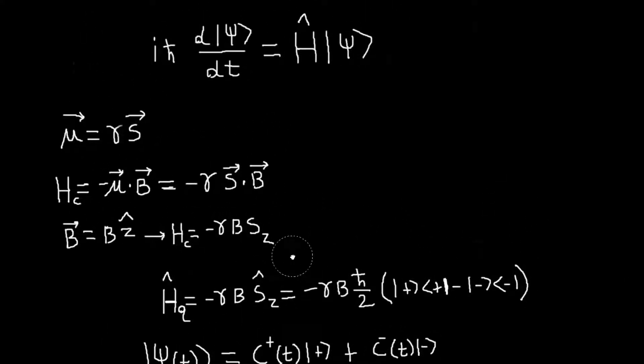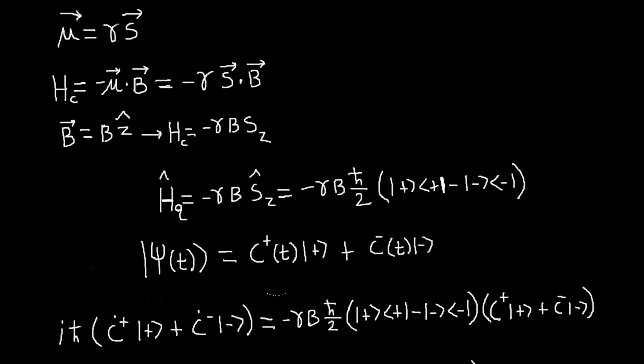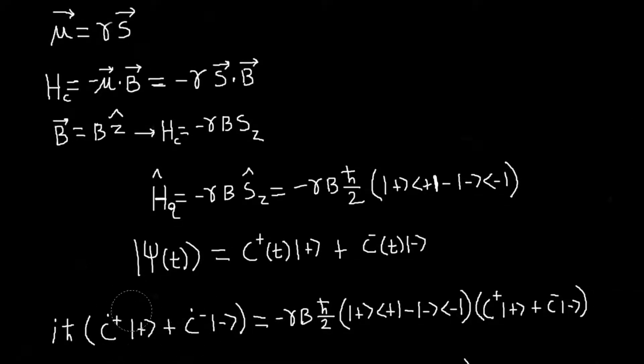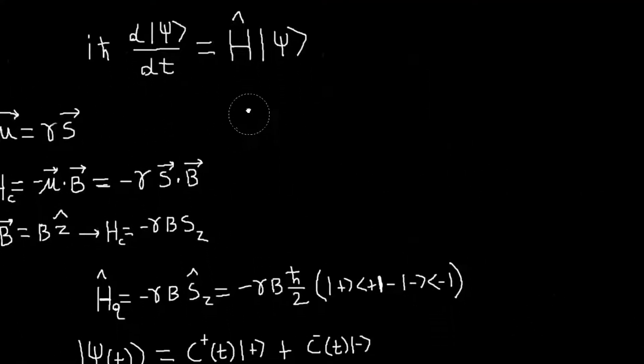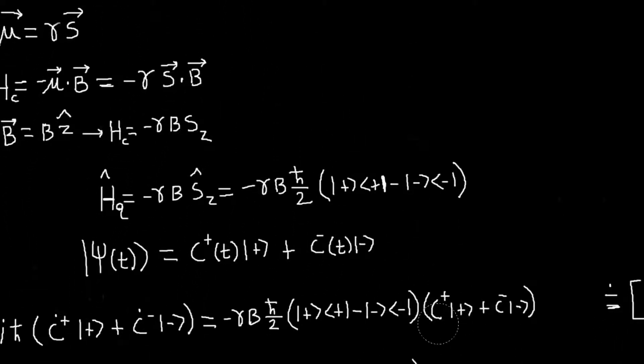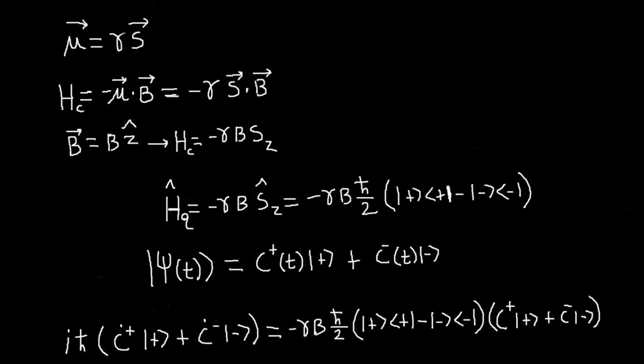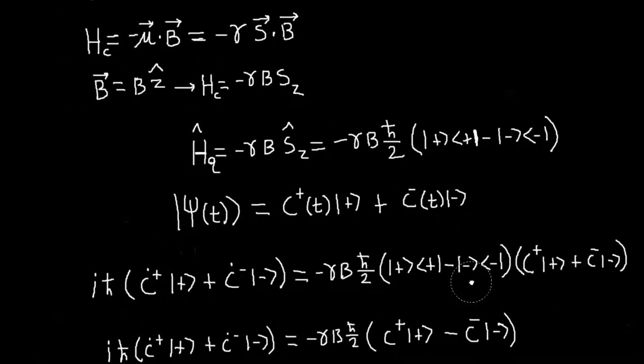If we just plug these things into the Schrödinger equation, what we get is i h bar times the time derivative of our state vector. And the time dependence is in these coefficients. So I've just written these c dots here, where dot just means derivative with respect to time. And that should equal the Hamiltonian, which we've derived here, acting on the state vector. And then I can compute this. I can just foil this out, basically. If you do that, I'll use that as an exercise. It's not hard. You just foil it.